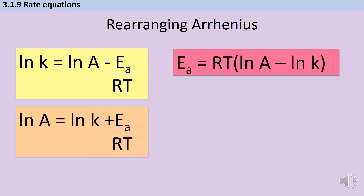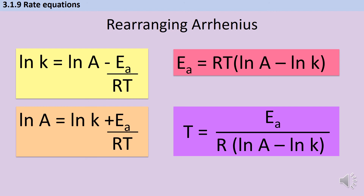The final rearrangement is to get temperature on its own. Right now we've got R multiplied by temperature multiplied by the natural log of A take away the natural log of K. So we divide both sides of the equation by R and by the natural log of A take away the natural log of K, and we get temperature on its own. Although you should know how to rearrange equations, there's nothing to stop you from just learning each one of these rearranged equations and pulling out the right one as and when you need it.